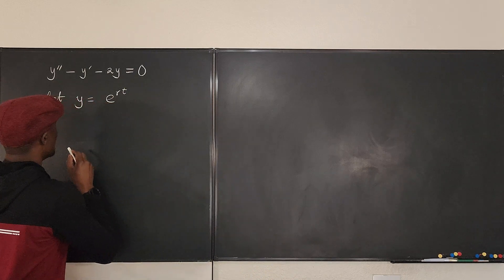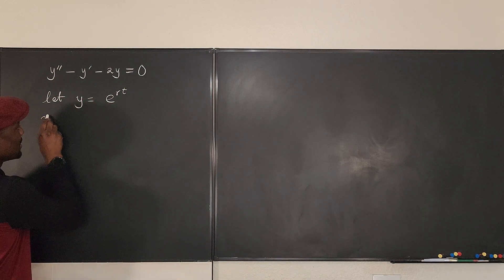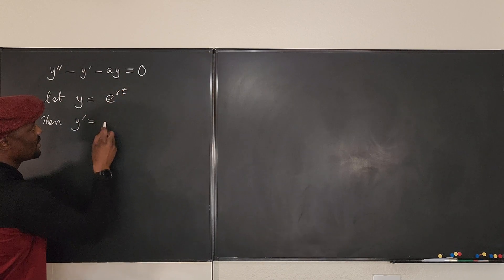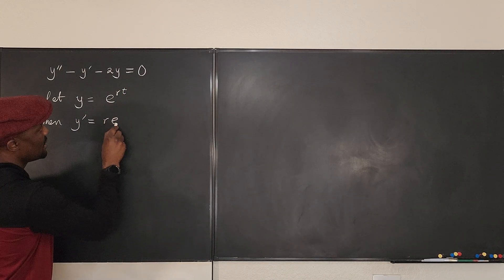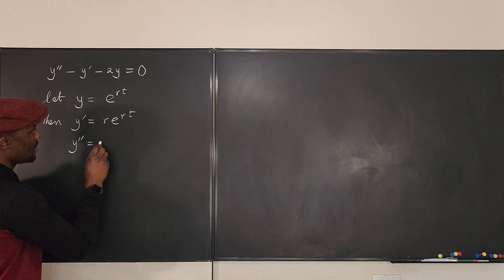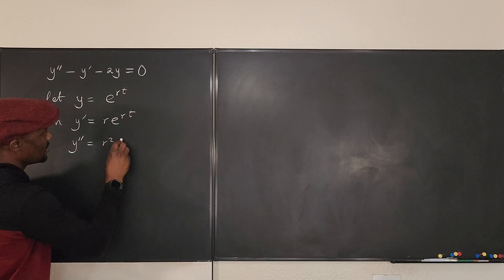Let's do that. So then the first derivative will be, if we differentiate this with respect to t, it's going to be re^(rt), and the second derivative is going to be r²e^(rt).